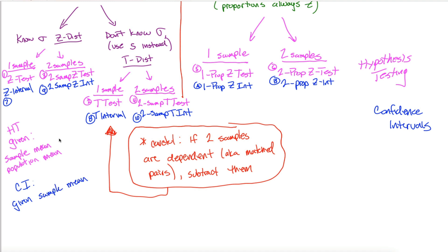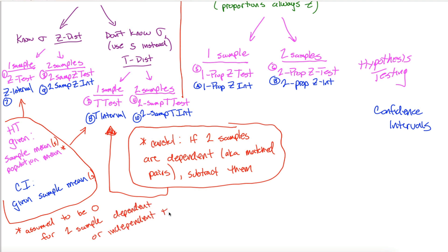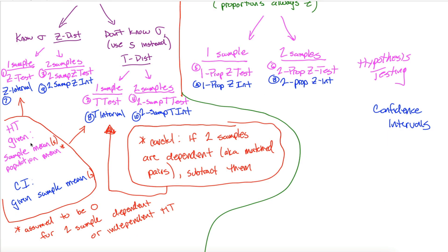For one-sample hypothesis testing you're given the sample mean. For two samples — which in our class will only be the t distribution — you'll be given two different sample means whether doing hypothesis testing or confidence intervals. The population mean is assumed to be zero for two sample hypothesis testing, representing the assumed difference between population means.